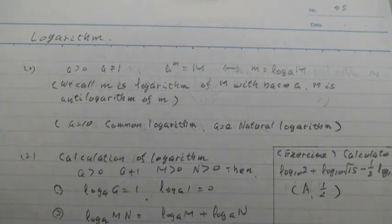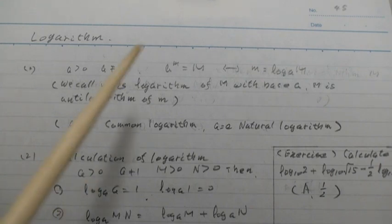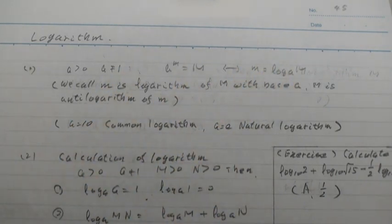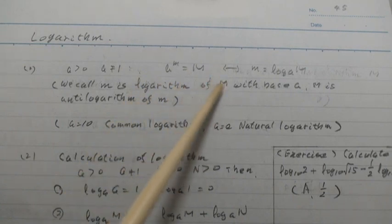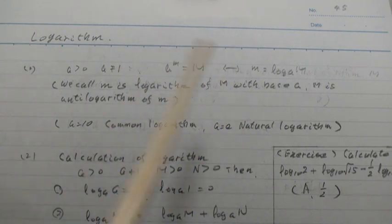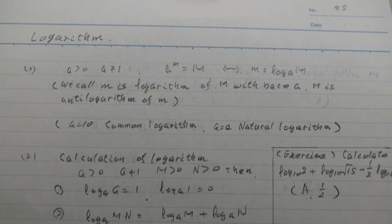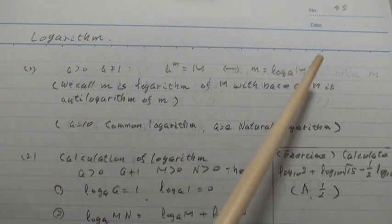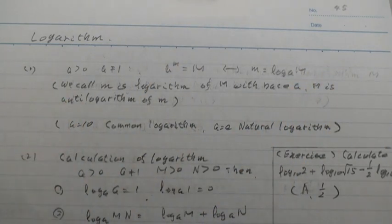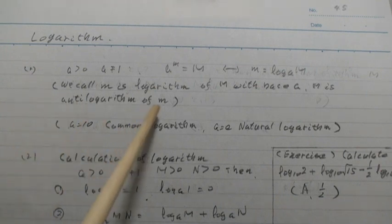Property 1: A is positive, A is not 1, and A to the M equals M, then display M equals log A M. We call M is logarithm of M with base A, M as antilogarithm of M.